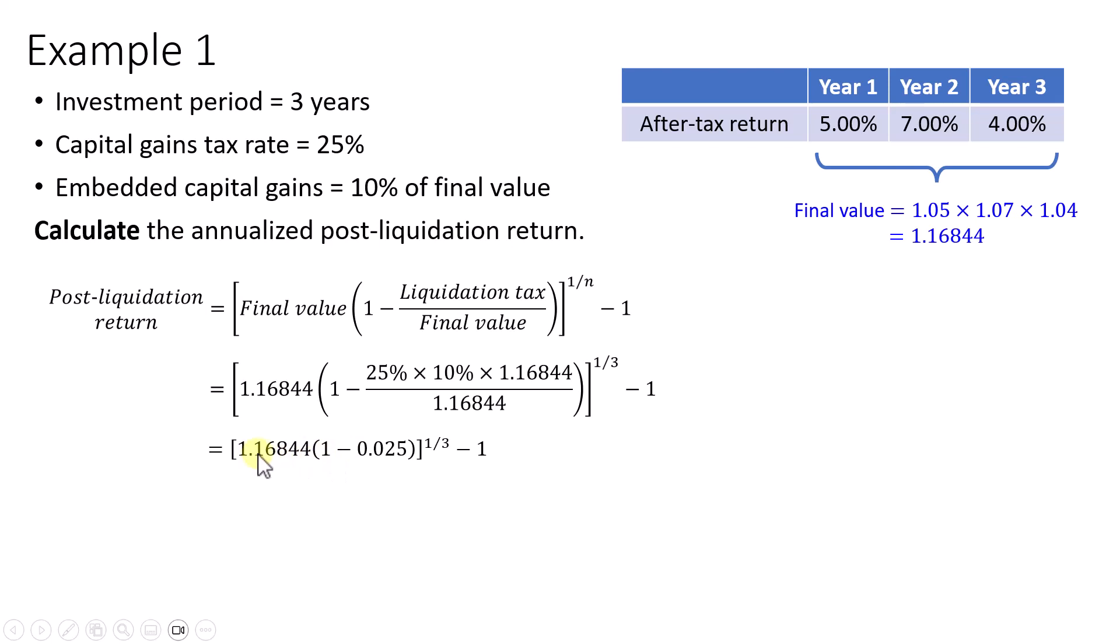Then we would multiply 1.16844 by 1 minus 0.025, and that gives us 4.44% per annum.